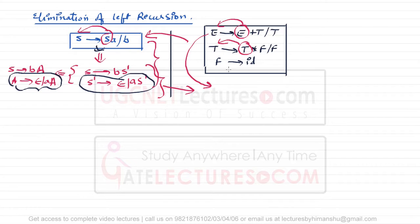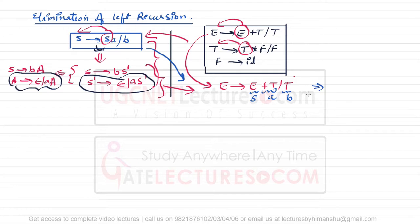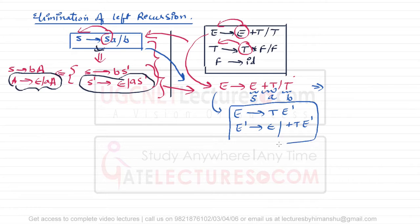Taking the first production E derives E plus T slash T, comparing it with the formula S derives Sa slash b: here E is S, plus T is a, and T is b. Therefore, using the formula we can write: E derives T E', and E' derives epsilon slash plus T E'.